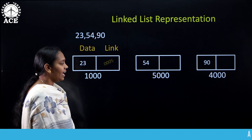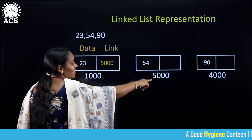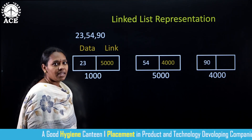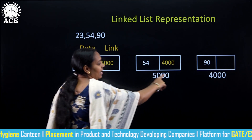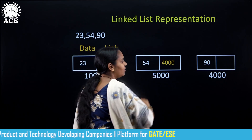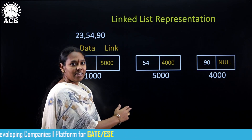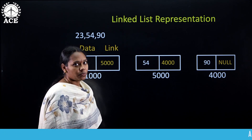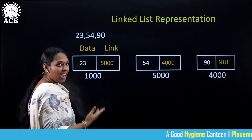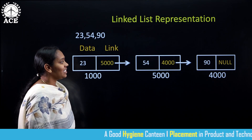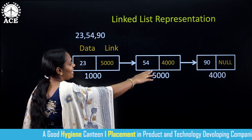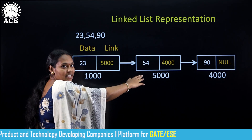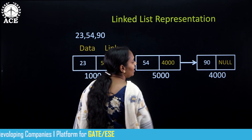In the first node, I have address 5000, which is the address of the second node. That means the first node is pointing to the second node. In the second node, I have the address 4000, which is the address of the third node. The second node is pointing to the third node. In the third node, we have a null. That means it is the end of the list — it is not pointing to any other node. We have data and addresses, and by using arrows we can connect these nodes. Now there is a link between each and every node.